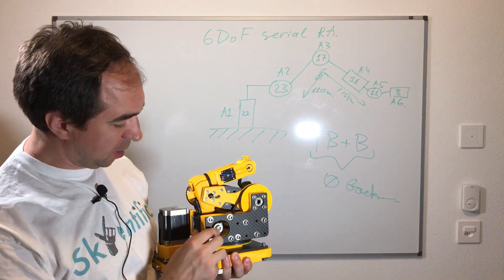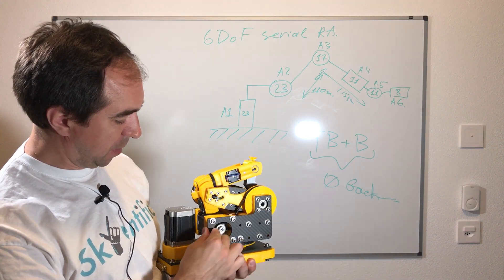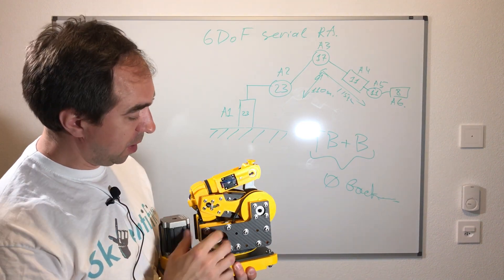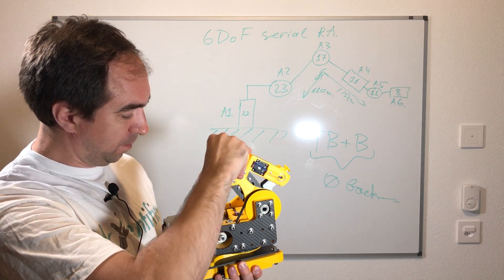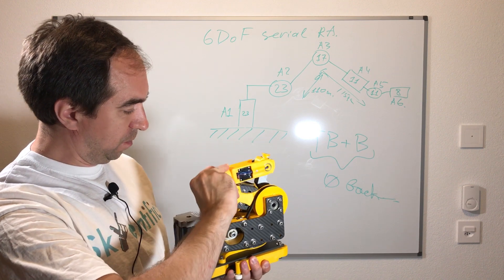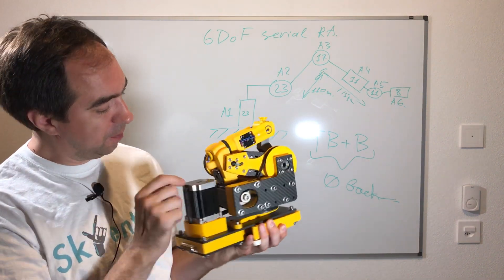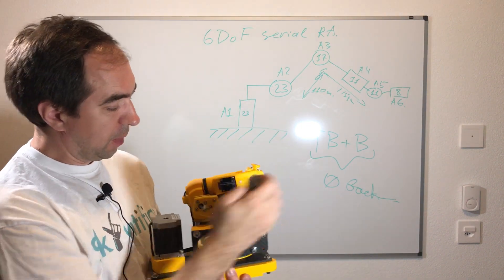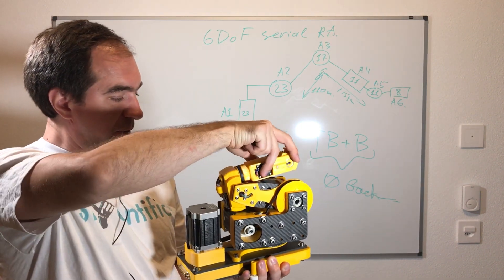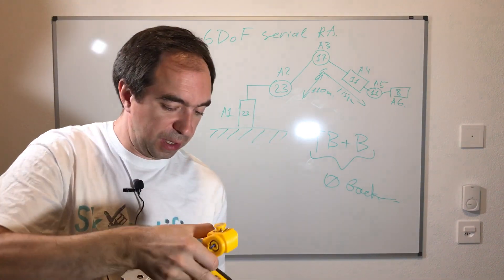So to show you the axes, this is axis 1, which is driven by this motor. This is axis 2, which is driven by the motor here, this one. This is axis 3 and the motor which drives it is here.